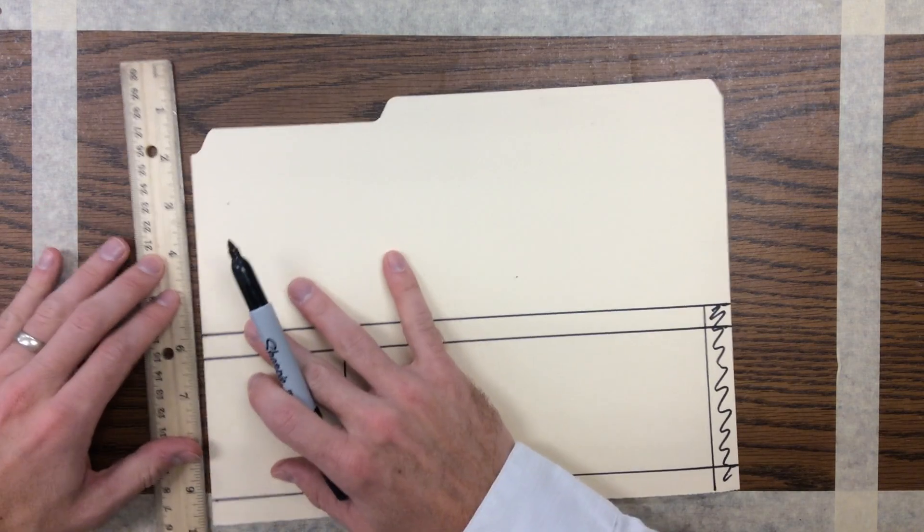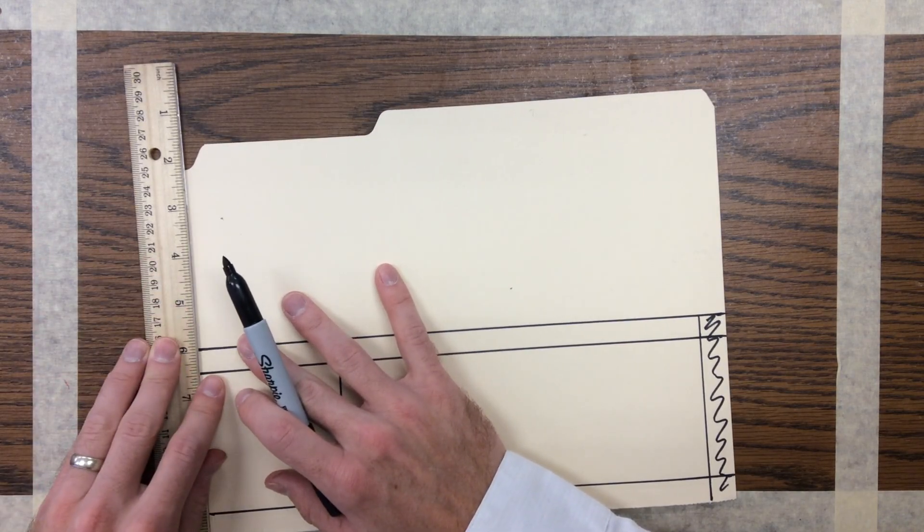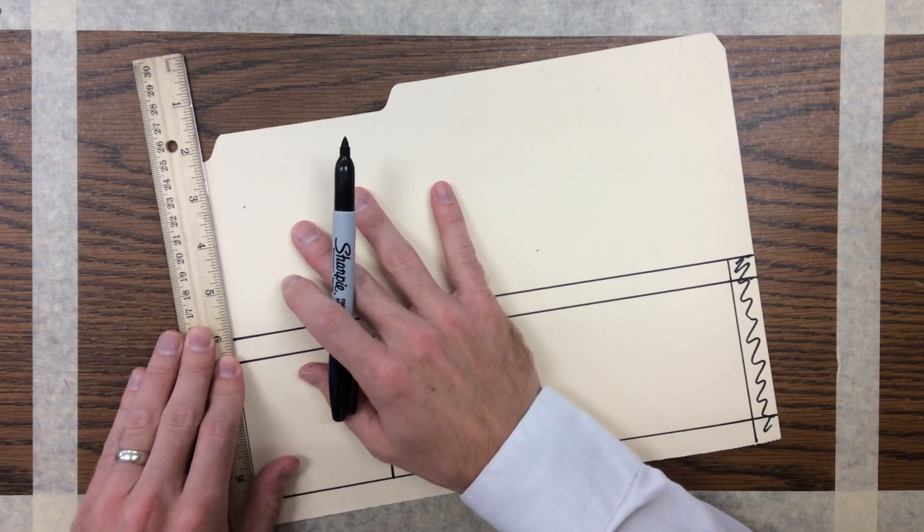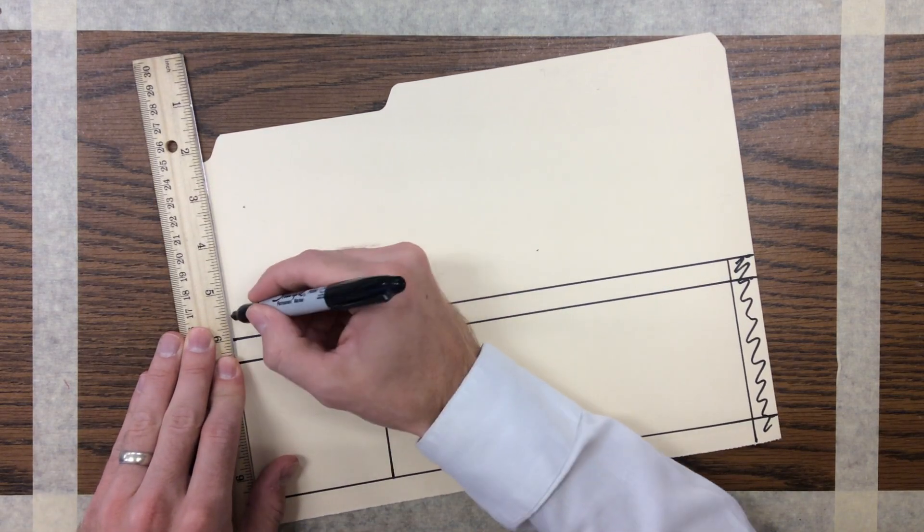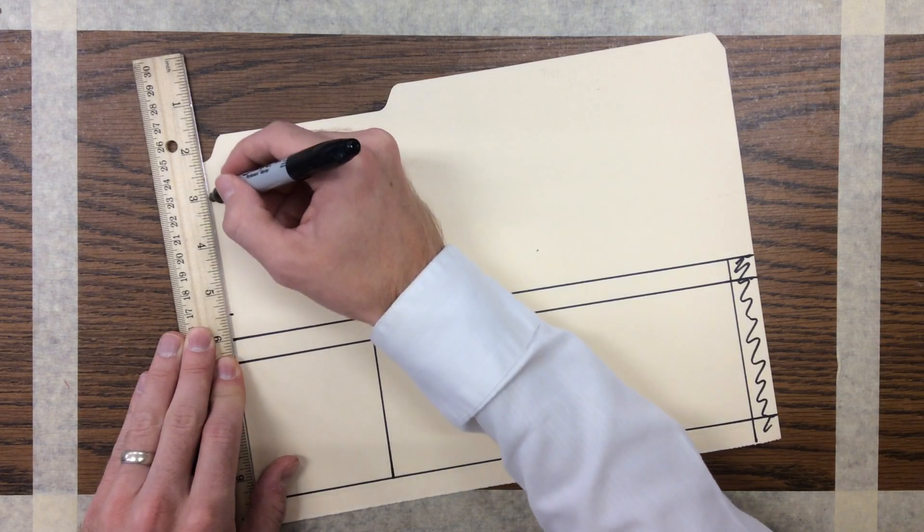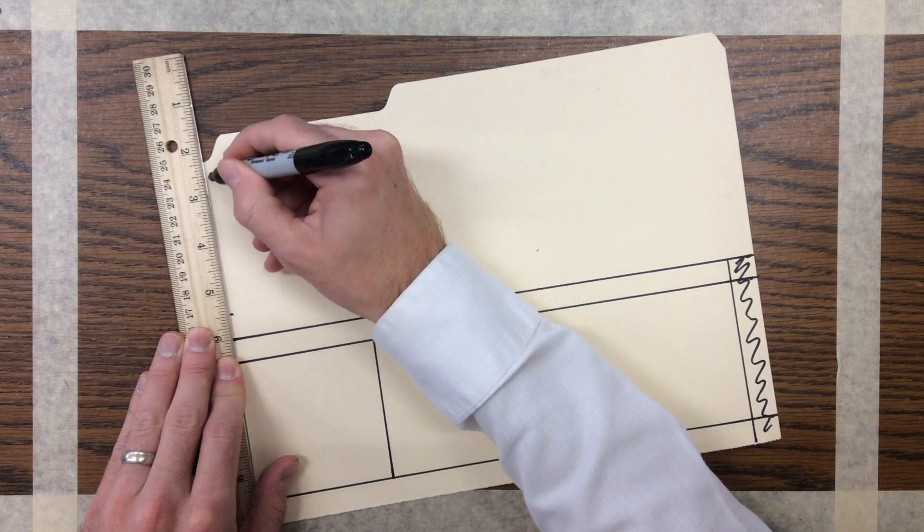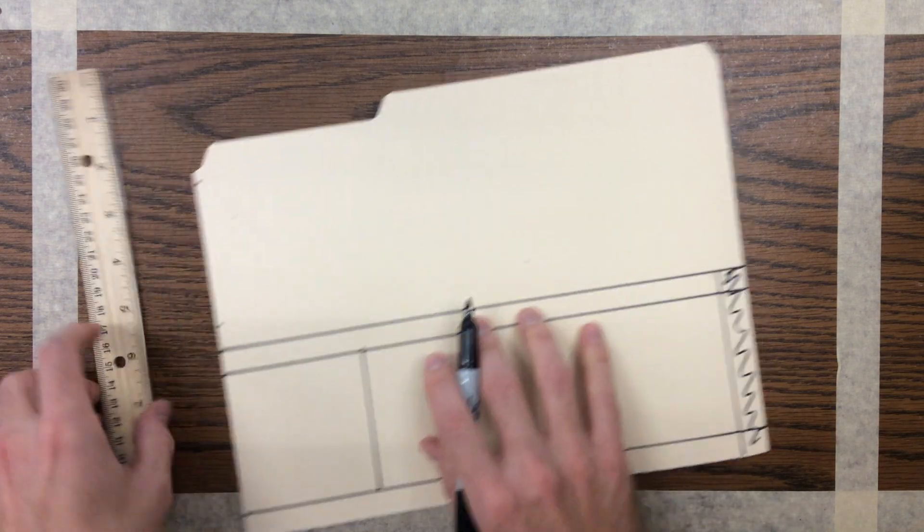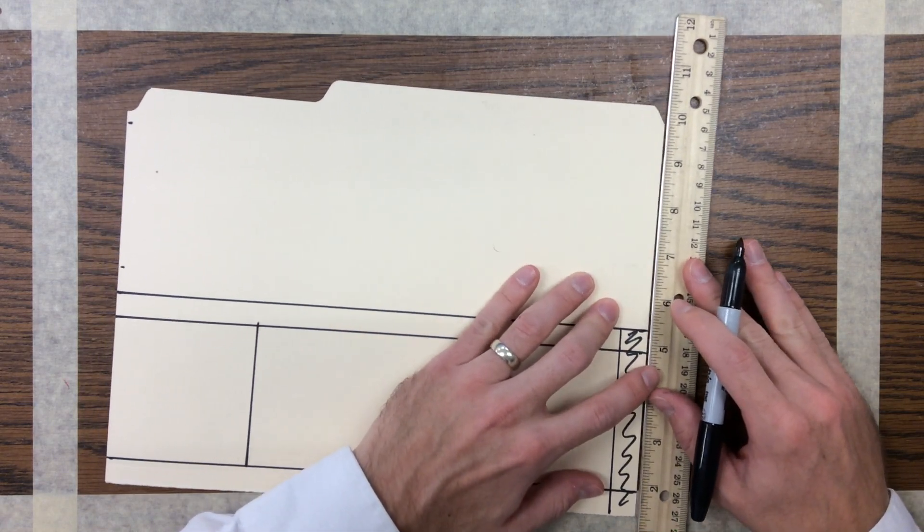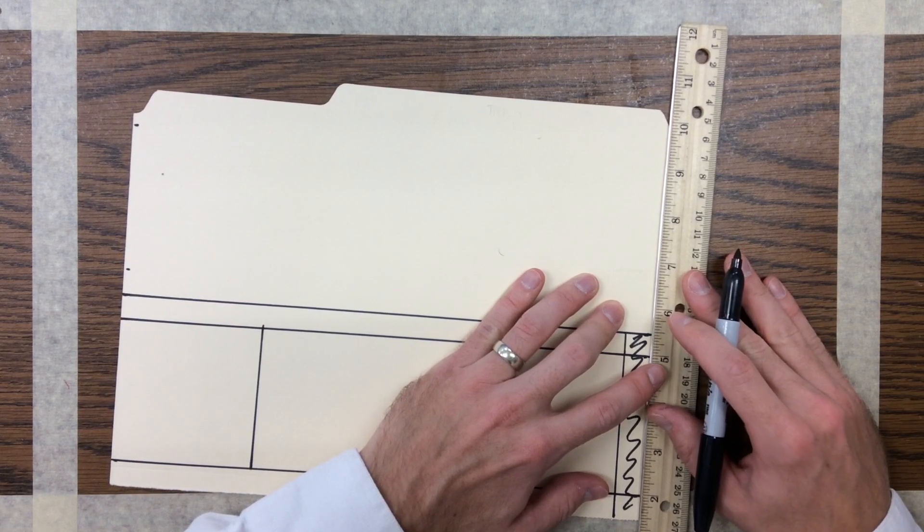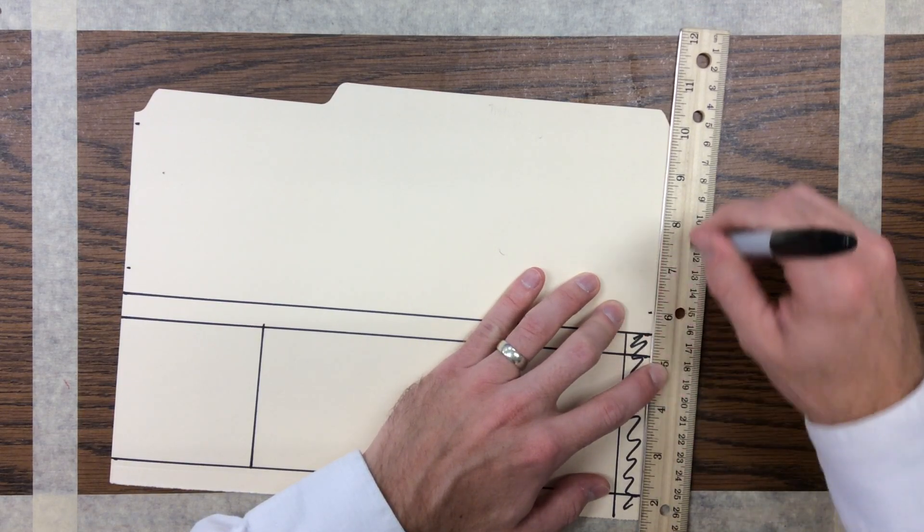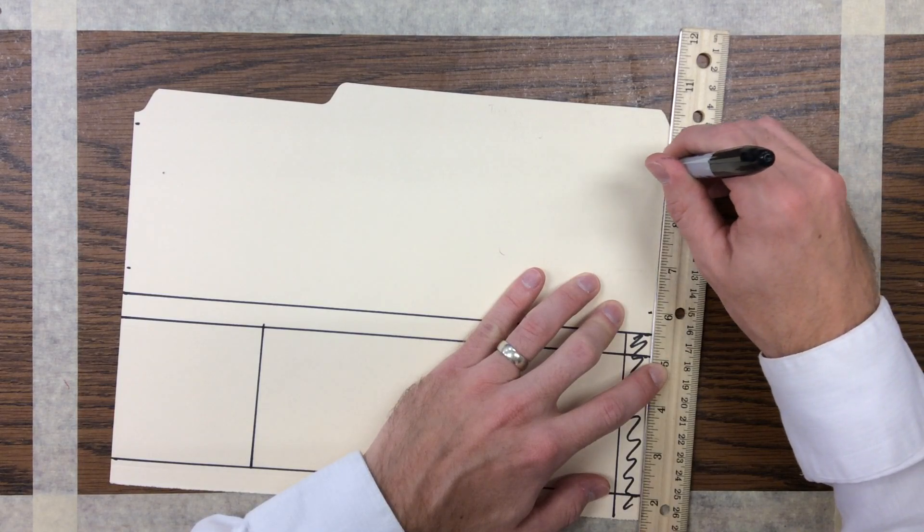From there, I'm going to measure up a half inch from the line at the top of my main body, and then three inches up from that. Same thing over here: I will measure a half inch up from my main body and then three inches up from that.